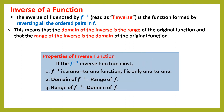Properties of inverse function. If f inverse function exists: number 1, f inverse is a one-to-one function — f is only one-to-one. Number 2, the domain of f inverse is the range of f. And number 3, the range of f inverse is the domain of f.